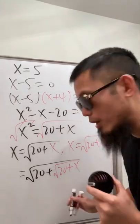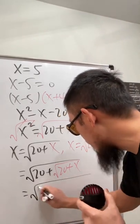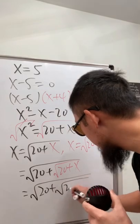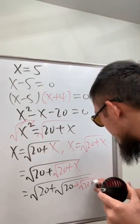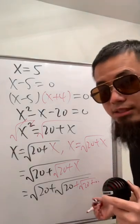But we can do this again right here. So this is the same as square root of 20 plus square root of 20. And then this is plus square root of 20. And then again, do it as many times as you would like.